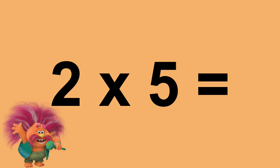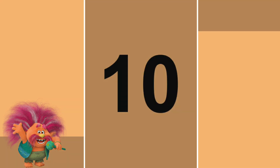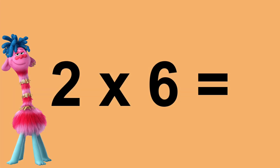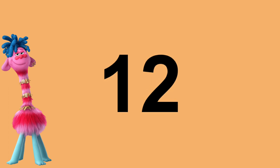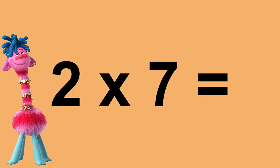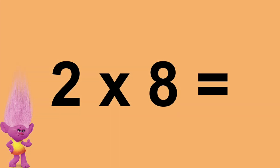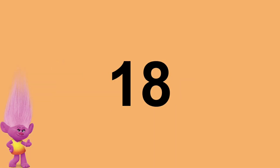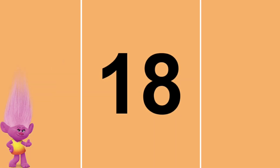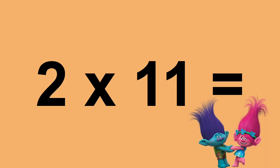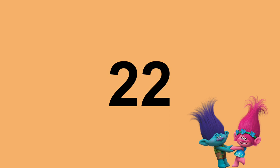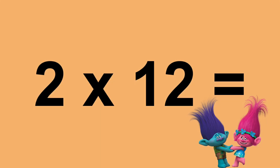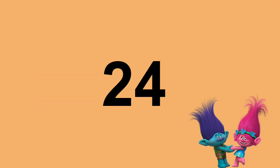Two times five equals ten. Two times six equals twelve. Two times seven equals fourteen. Two times eight equals sixteen. Two times nine equals eighteen. Two times ten equals twenty. Two times eleven equals twenty-two. Two times twelve equals twenty-four.